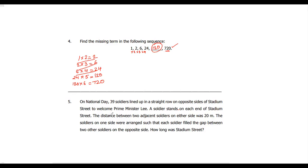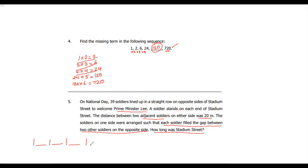Now let's go to question number 5. On National Day, 39 soldiers lined up in a straight row on opposite sides of Stadium Street to welcome Prime Minister Lee. A soldier stands on each end of Stadium Street, and the distance between two adjacent soldiers on either side was 20 meters. The soldiers on one side were arranged so that each soldier filled the gap between two other soldiers on the opposite side. How long is Stadium Street? So essentially there were 39 soldiers standing in straight rows on opposite sides.